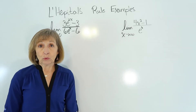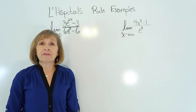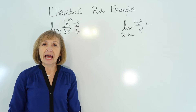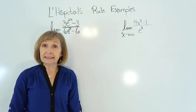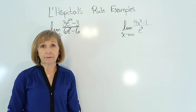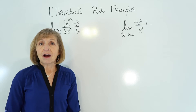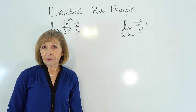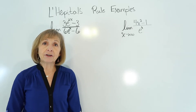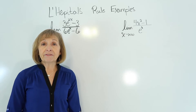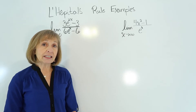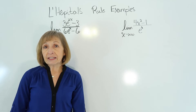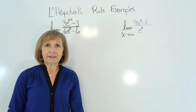L'Hopital's Rule is a method for evaluating limits of expressions that are in what is called an indeterminate form. Indeterminate forms are expressions like zero over zero, infinity over infinity, negative infinity over infinity, infinity over negative infinity, or negative infinity over negative infinity.